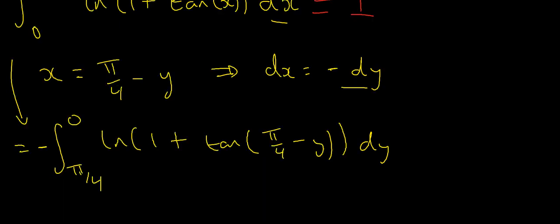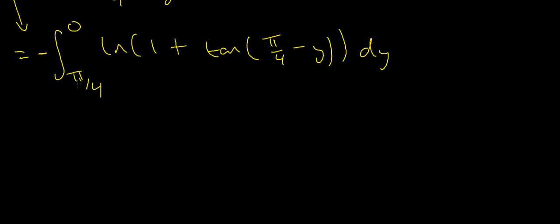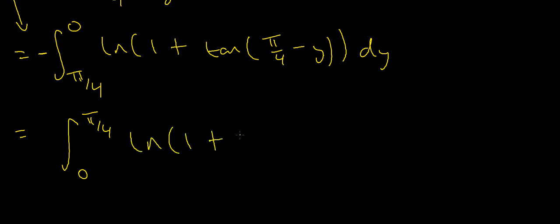If I swap the limits of integration, that introduces an extra negative sign. So that gives me minus minus the integral from 0 to π/4, because swapping the lower and upper limits introduces a negative sign which cancels with the negative sign I already have. So that gives me the natural log of 1 plus the tangent of (π/4 minus y).